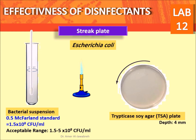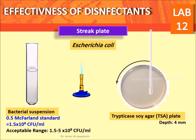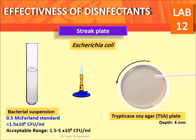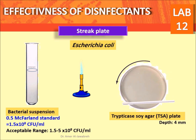Squeeze the swab against the walls of the tube. Streak the swab vertically, horizontally, and on the rim of the TSA plate. Cover and allow to stand for 5 to 10 minutes.